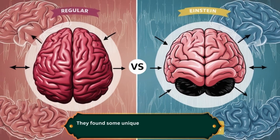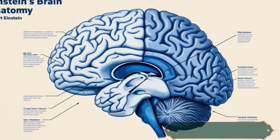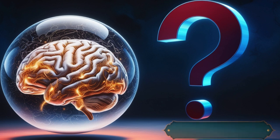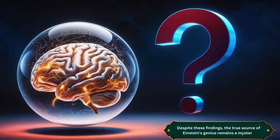They found some unique features in Einstein's brain, like a higher number of glial cells and unusual folds in certain areas. Despite these findings, the true source of Einstein's genius remains a mystery.